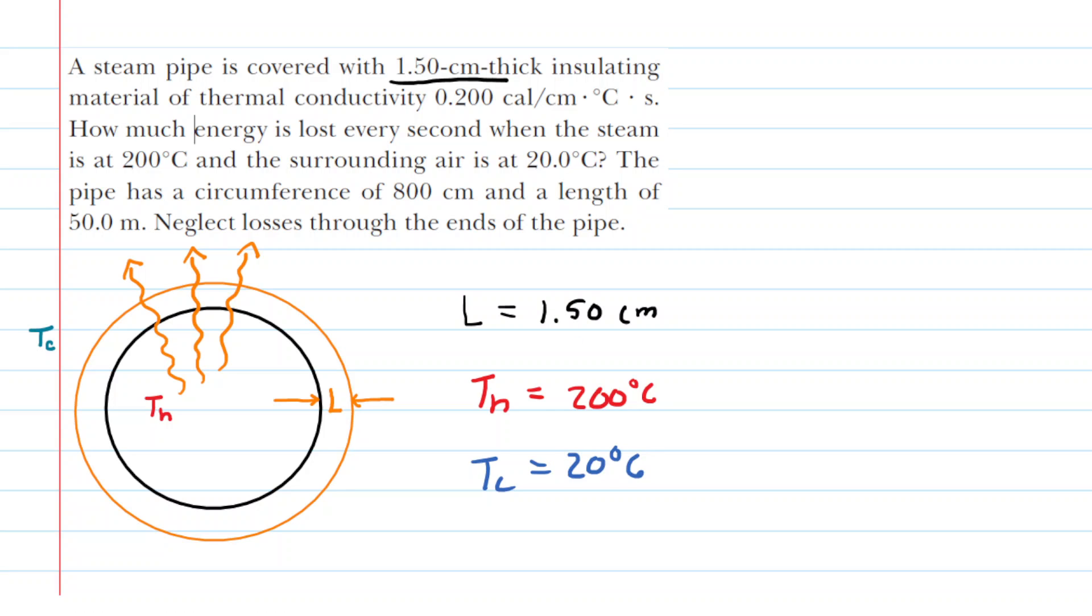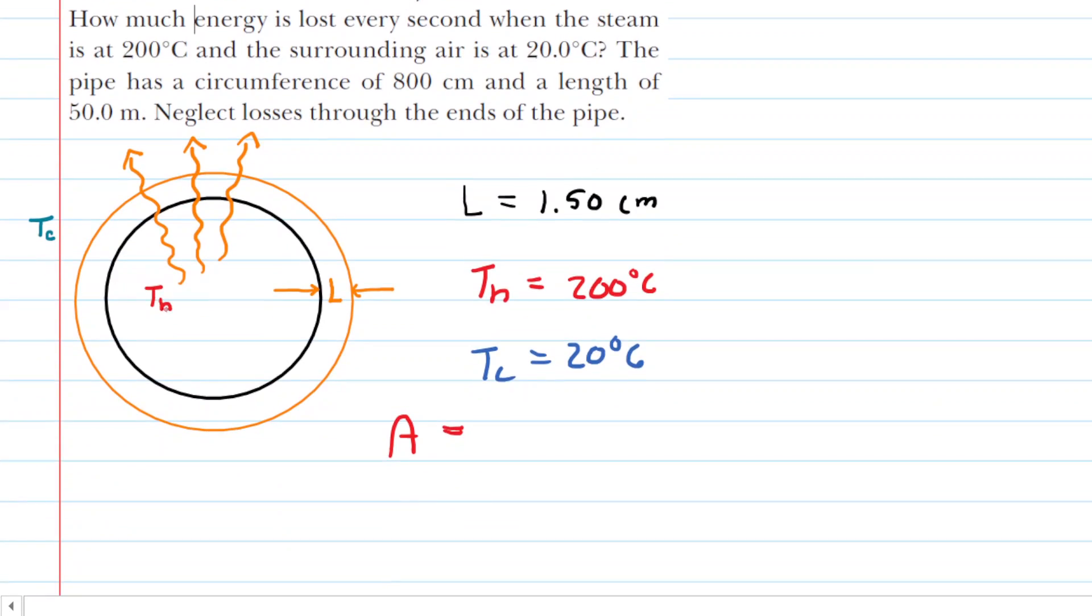We also have another factor to consider, and that would be the area of the pipe. Now this one's a little tricky to visualize, but the area of the pipe is going to be the lateral area of the pipe. So if you draw the pipe in this orientation, the amount of area that the energy transfers through would be this area right here. If you unfolded that pipe, you would form a rectangular surface like this.